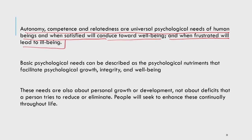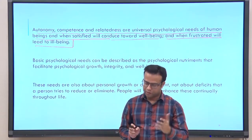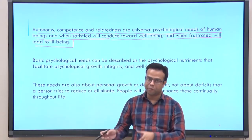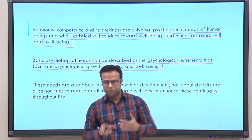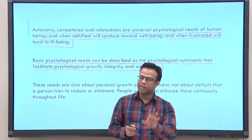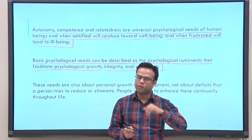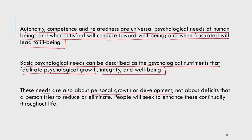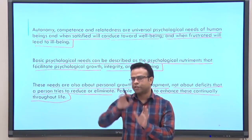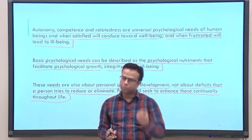These three important needs — autonomy, competence, and relatedness — are universal psychological needs of human beings. When satisfied, they conduce towards well-being; when frustrated, they lead to ill-being. These basic psychological needs can be described as psychological nutrients that facilitate psychological growth, integrity, and well-being. They are also about personal growth and development — not merely about reducing deficits — and people seek to enhance them continually throughout their life.